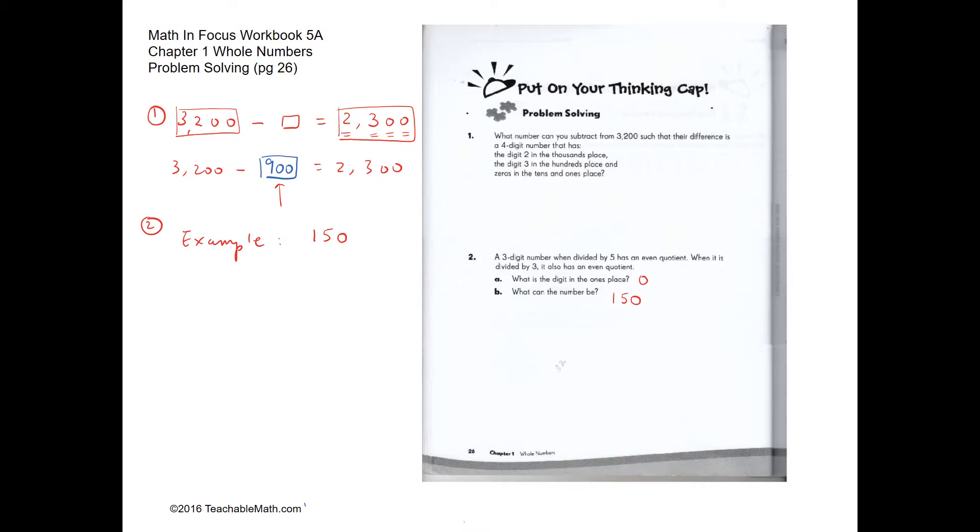Question two. A three-digit number when divided by 5 has an even quotient. When it is divided by 3, it also has an even quotient. So a possible number is 150. 150 divided by 5 gives you 30, which is even, and 150 divided by 3 is 50, which is also even. So what is the digit in the ones place? Zero.